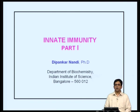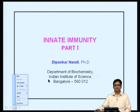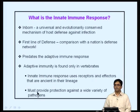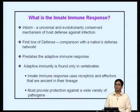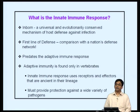Today's lecture is on innate immunity. You are all familiar with the immune response, which can be broadly categorized into the innate immune response and the adaptive immune response. The innate immune response is the first line of defense; innate stands for inborn. It is a universal and evolutionarily conserved mechanism of host defense against infection. The adaptive response, on the other hand, takes some time — it is delayed — but it is a far more specific response than the innate response.